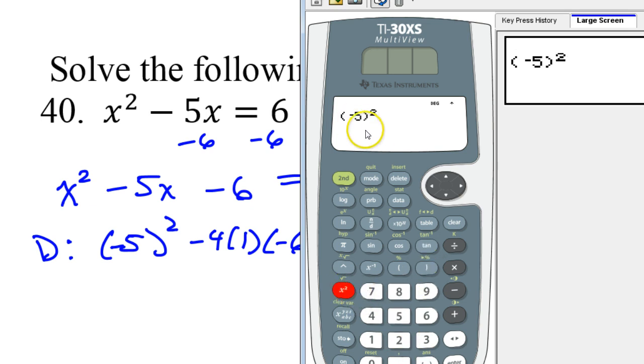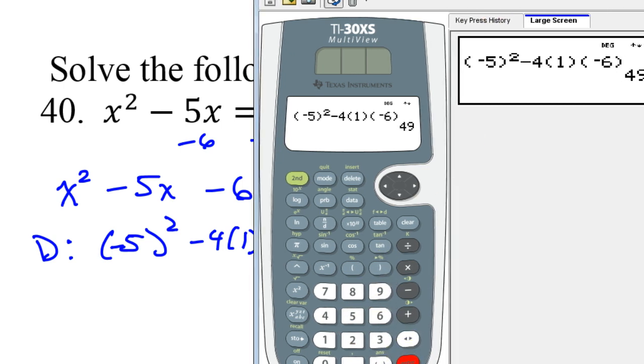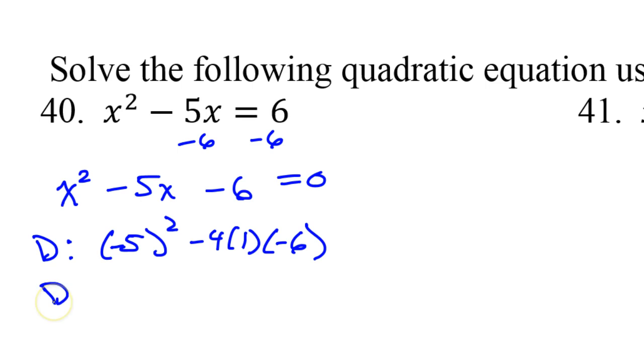If you don't put it in parentheses, you will get the wrong answer. So minus 4 times 1, times negative 6. So we're getting 49. Everyone should have gotten 49 for that discriminant. And you should show it separately on your paper just like I just did. That way if you get the wrong answer, you can still get your partial credit.